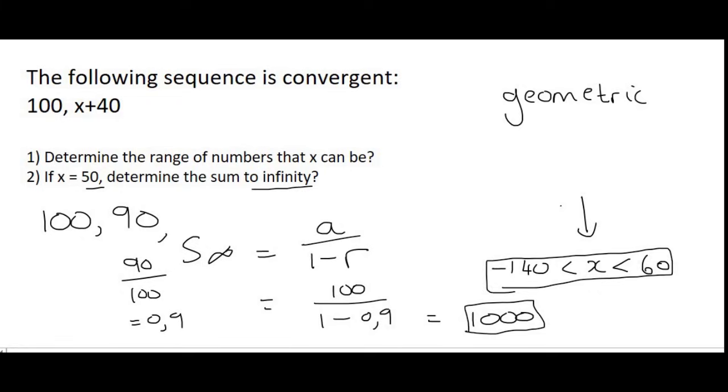Because remember what happens? Eventually these term numbers are going to become so small and eventually they will get to 0. At that point the sum will stay constant and that number is going to be 1000.